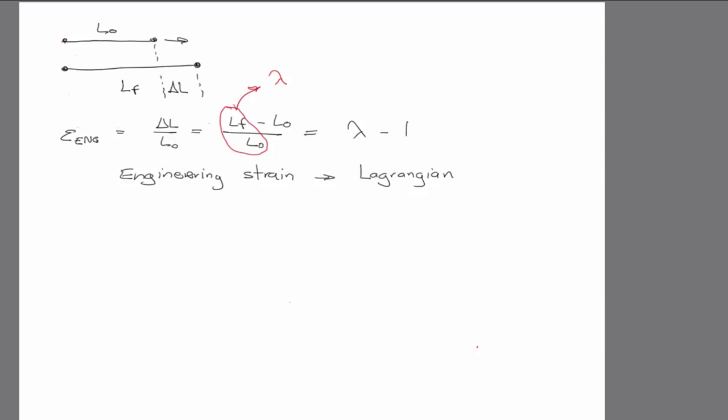But we could choose, and there's no reason we have to choose to normalize it by the original length. We could choose to normalize it by something else, and one common way to do it is the instantaneous length during deformation, right?